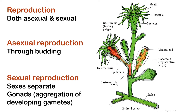Cnidarians reproduce by both asexual and sexual means. Asexual reproduction is very common, especially in polypoid species — those species which have the polyp body form. New individuals are usually formed by the process of budding. A bud arises as an outpocketing of the body wall and contains an extension of the gastrovascular cavity, i.e. the enteron, in all of the body wall layers.